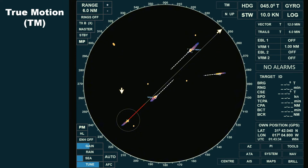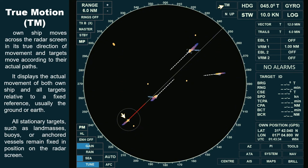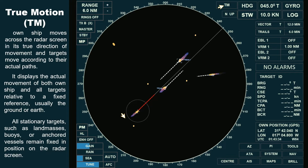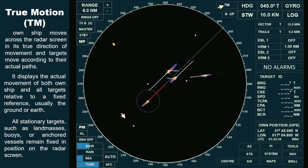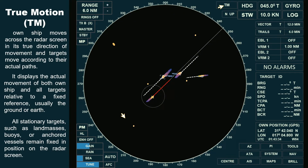In true motion, own ship moves across the radar screen in its true direction of movement, and targets move according to their actual paths. It displays the actual movement of both own ship and all targets relative to a fixed reference, usually the ground. All stationary targets, such as landmasses, buoys, or anchored vessels, remain fixed on the radar screen.